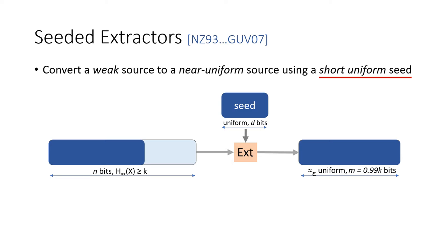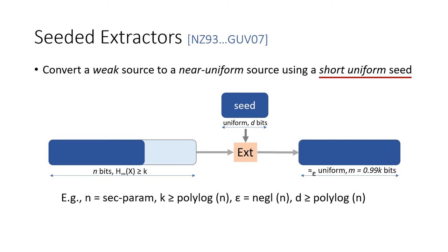What is possible is a variant that takes the help of a short uniformly random seed to convert an n-bit source with min-entropy k to an almost k-bit uniform distribution. This is pictorially represented on the slide as an algorithm that on input a source and a seed outputs a distribution that's close to uniform. In fact, the size of the seed can be much smaller than the min-entropy of the input source or the size of the output. For example, Guruswami et al. show that the min-entropy can be as small as polylogarithmic, the seed can also be polylogarithmic, and the error can be a negligible function of the size of the source.